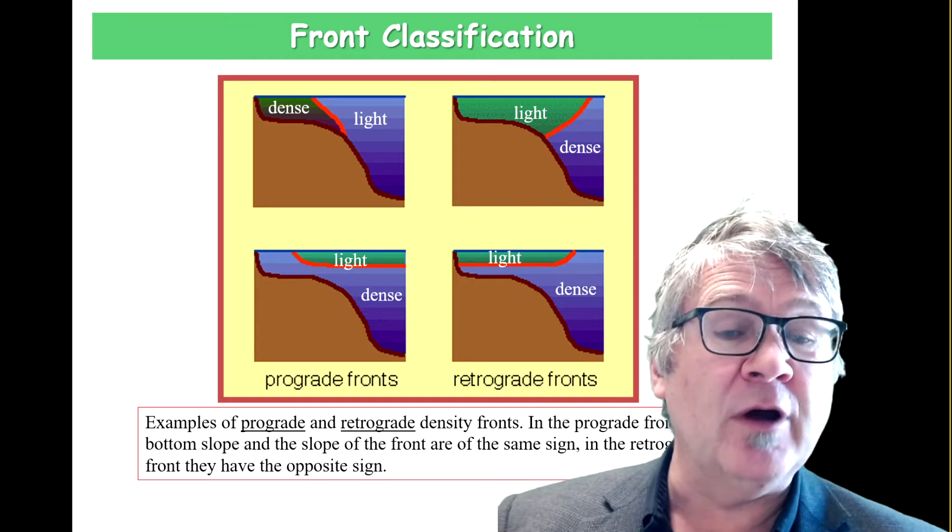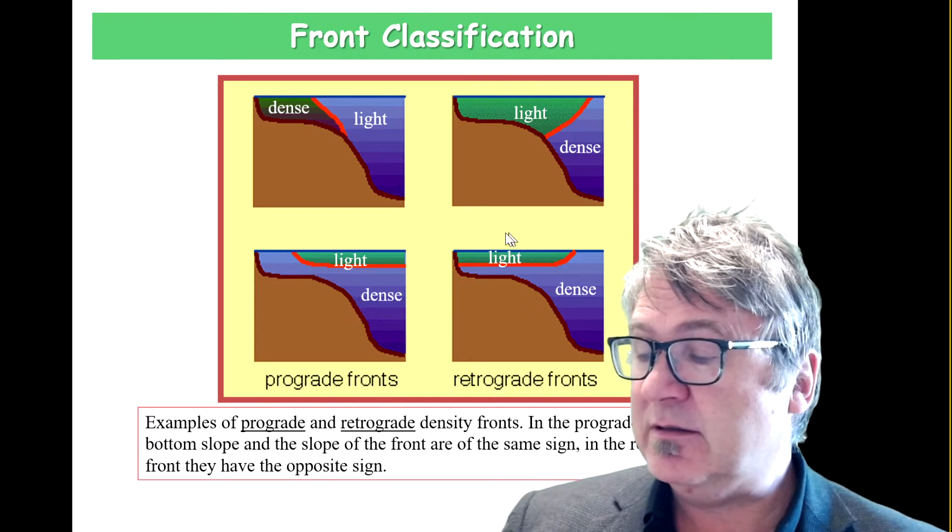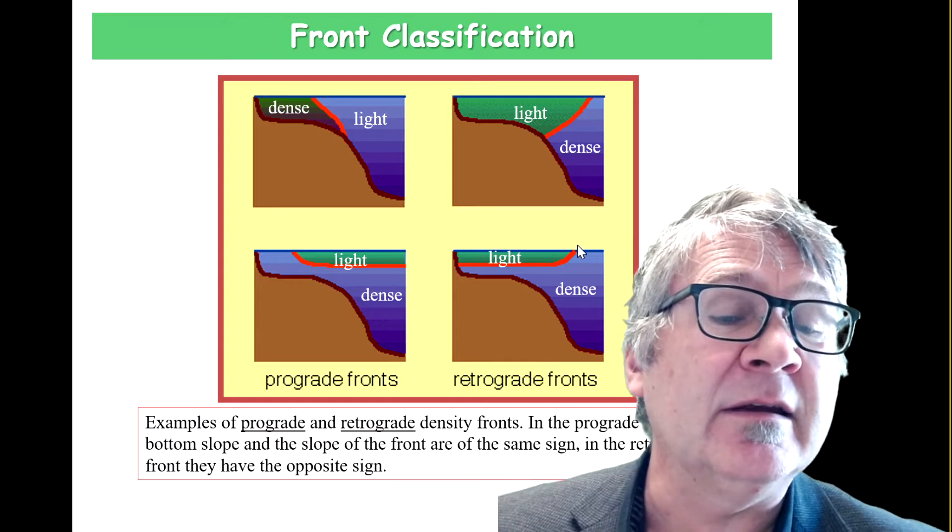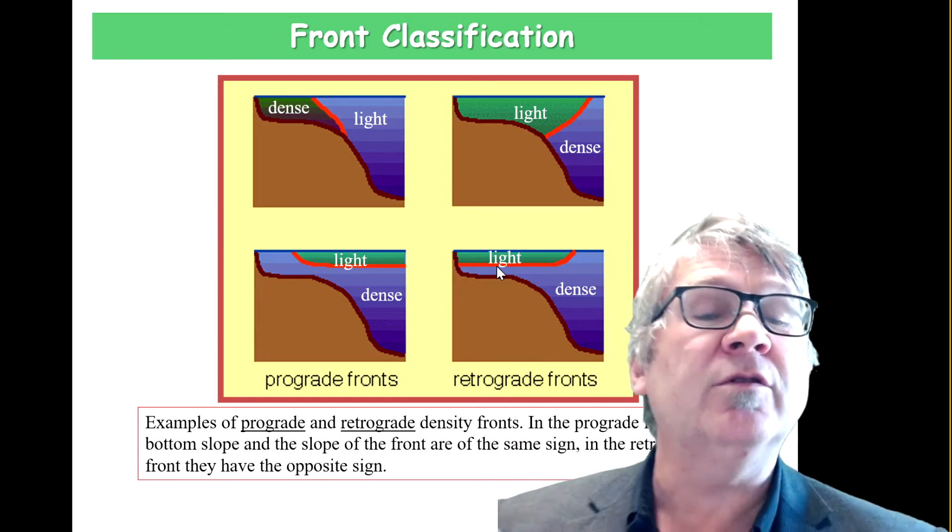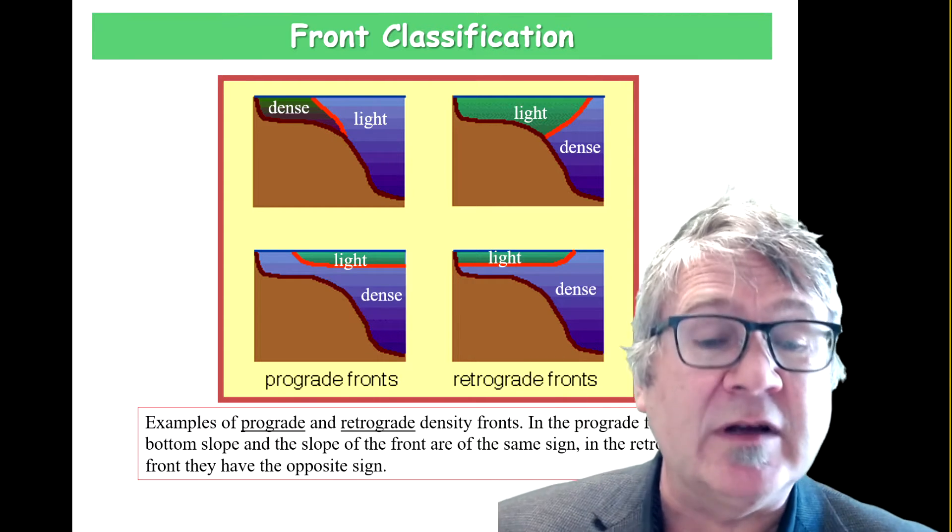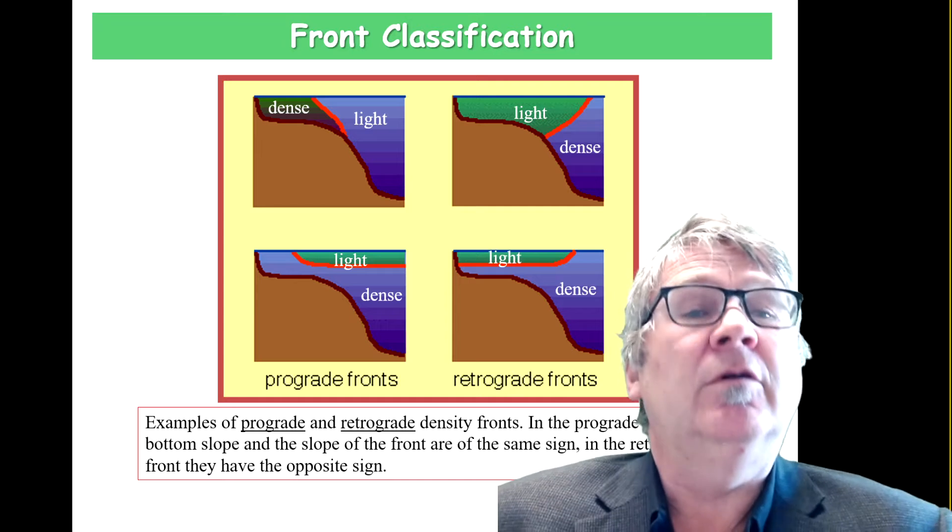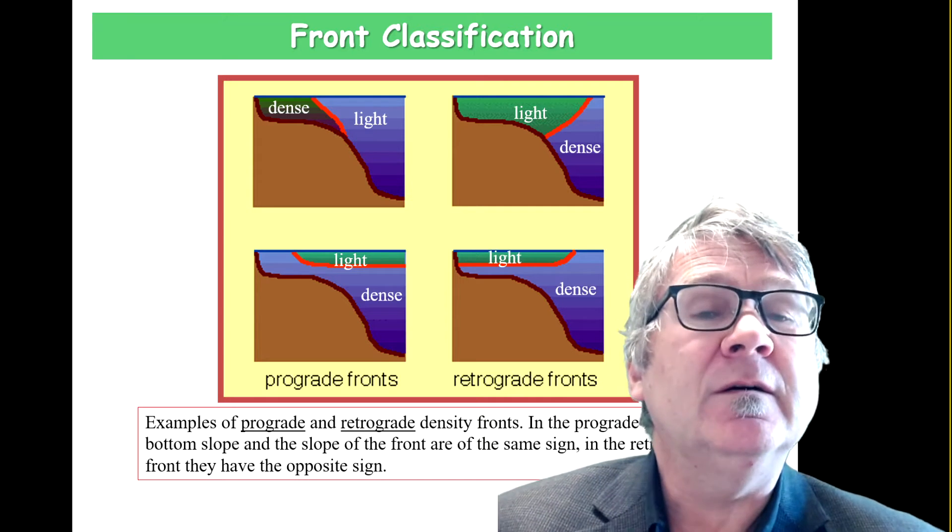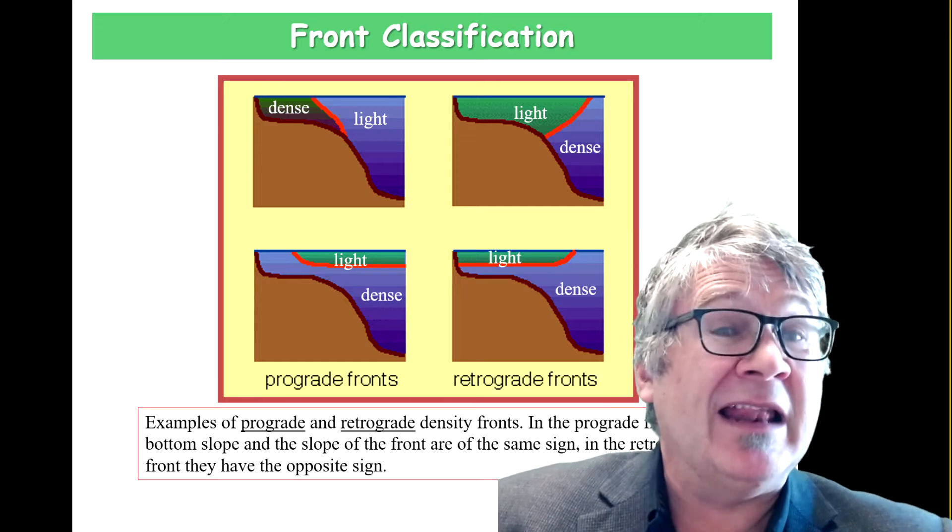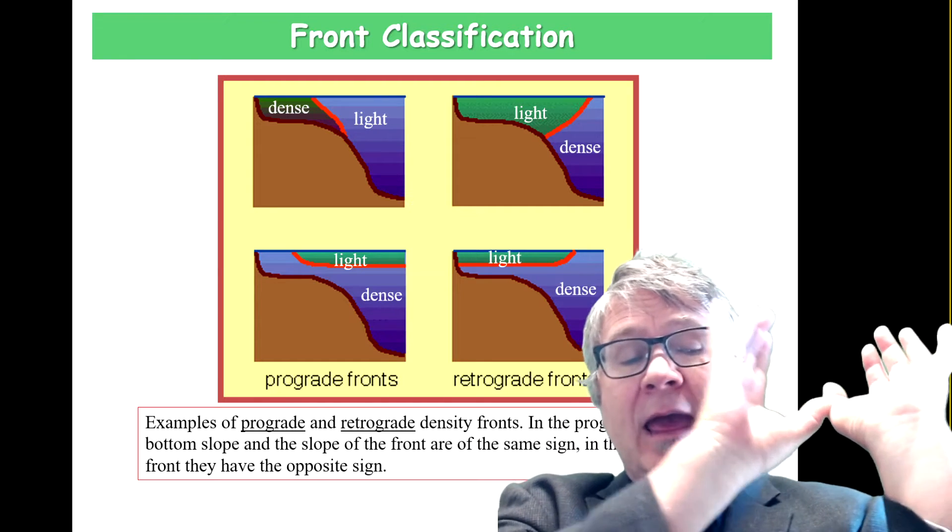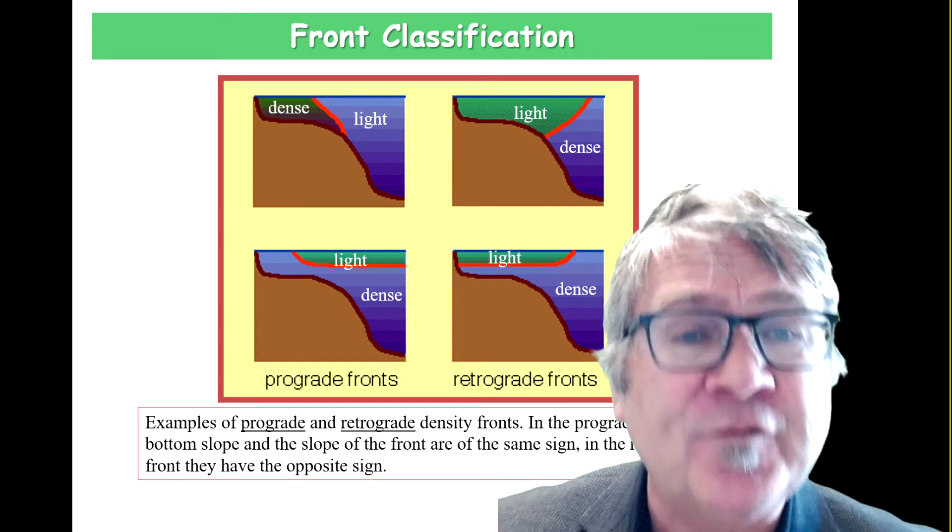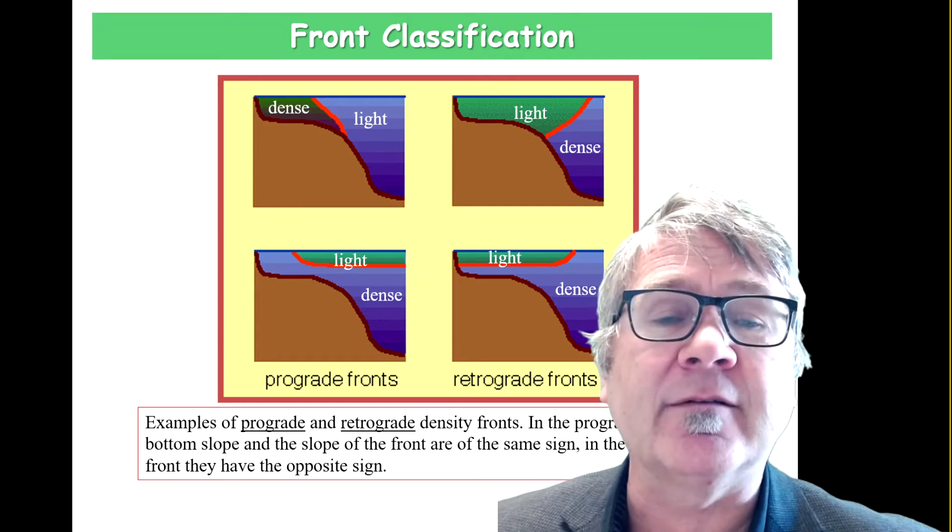Look at the bottom right, the example here on the bottom right. It's this example here where you have light water sitting near the surface. What creates this is a river plume. It's an outflow of fresh water, low salinity water from a large river, ending up on the surface because low salinity water is lighter, can offset temperature effects.